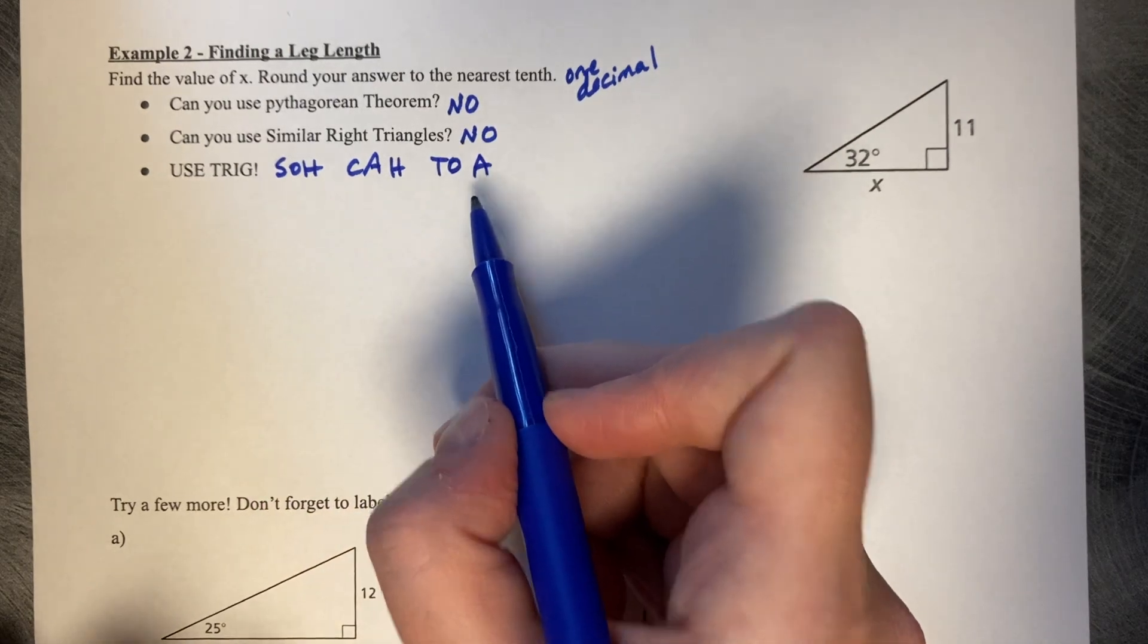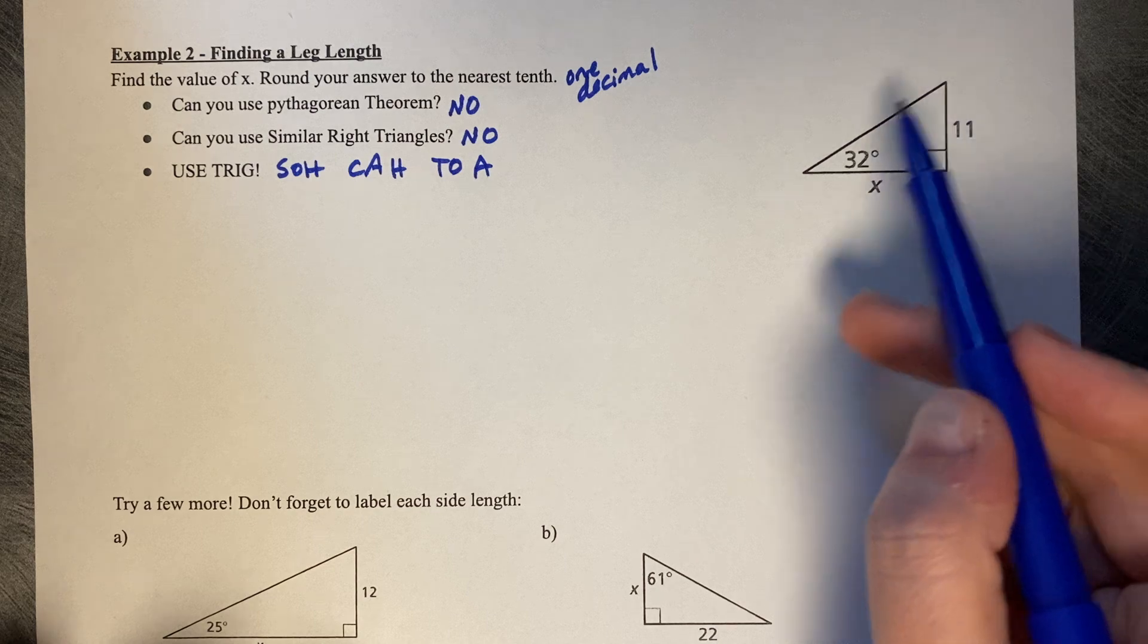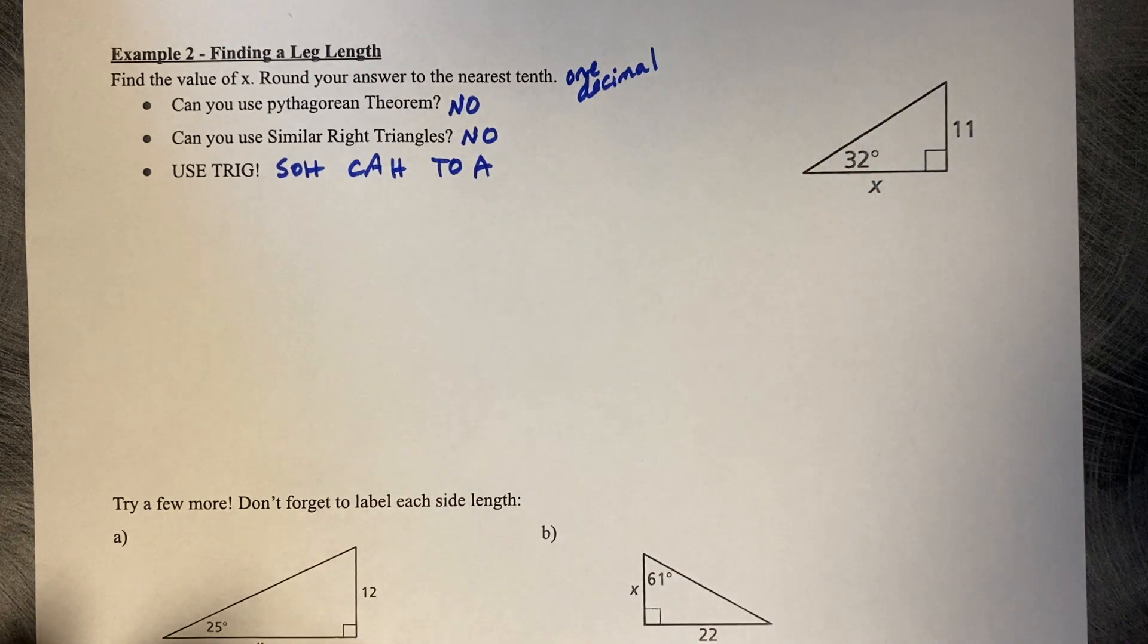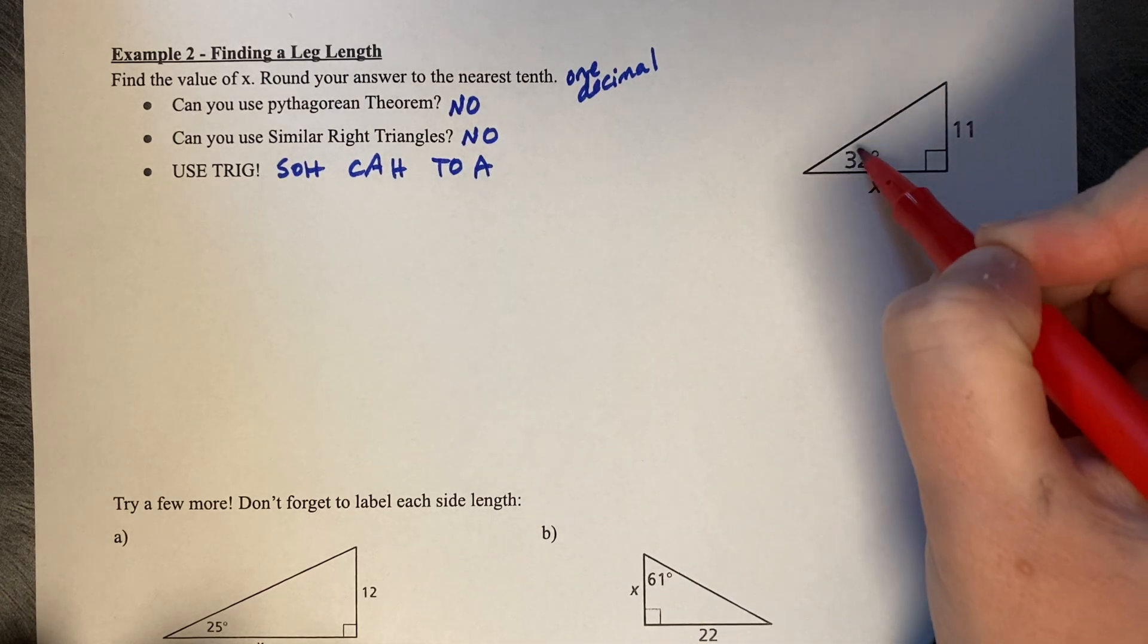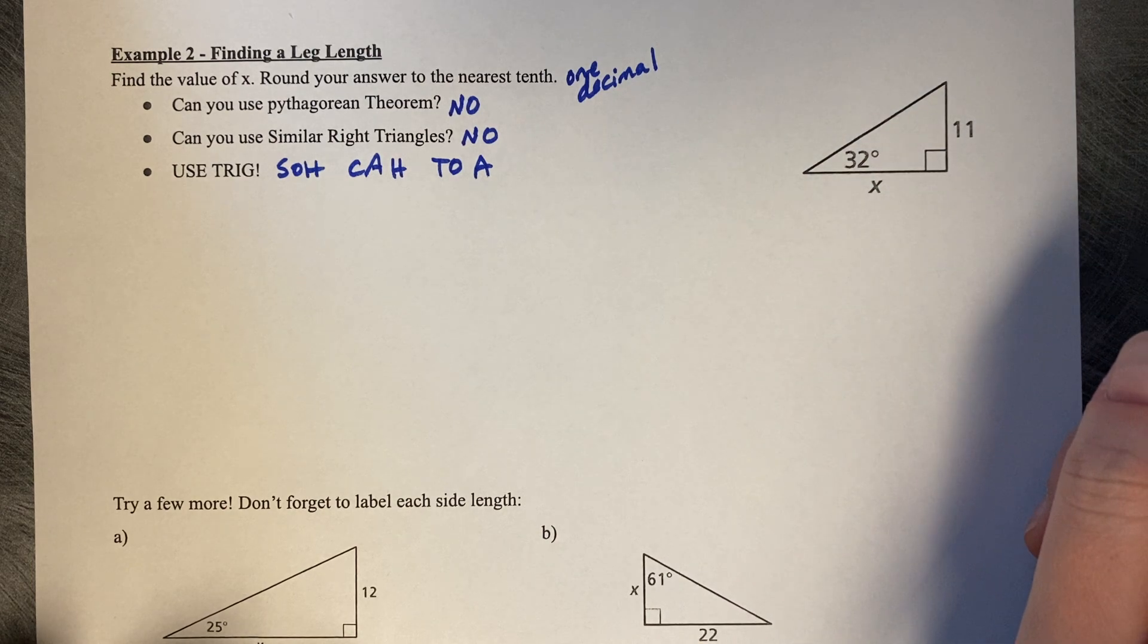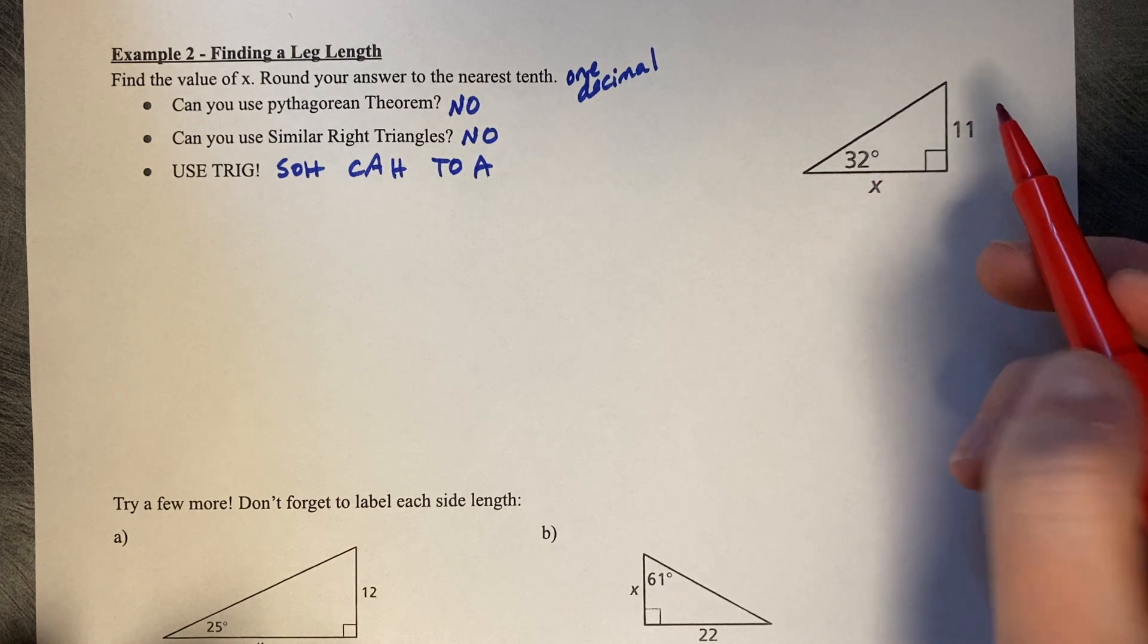SOHCAHTOA is how you decide which trig ratio you're supposed to use on any given triangle. Once we approach this triangle, we would like to label the side lengths based on this theta. Recall last class, we would draw a theta in one of the acute angle corners. In this case, we actually have an angle measure.